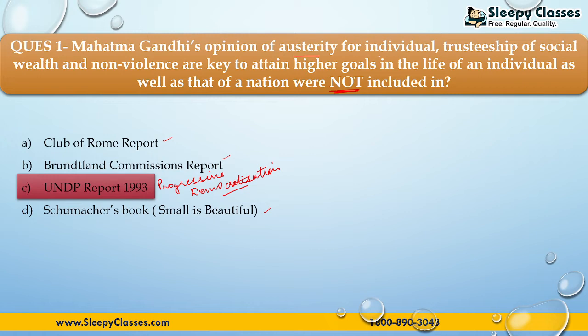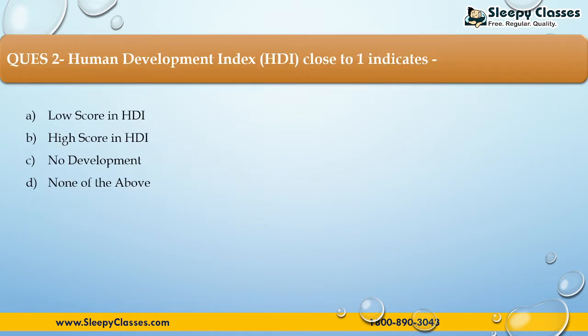The next question is: Human Development Index close to 1 indicates — First, low score in HDI; Second, high score in HDI; Third, no development; Fourth, none of the above.